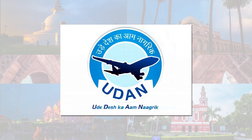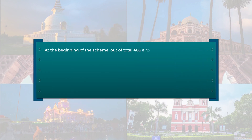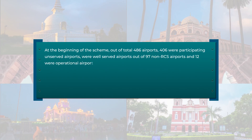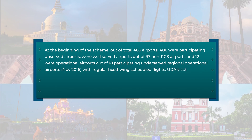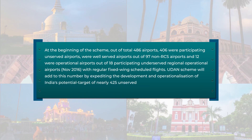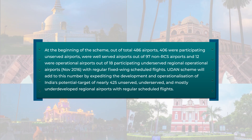The objective of UDAN is letting the common citizen of the country fly, aimed at making air travel affordable and widespread to boost inclusive national economic development, job growth, and air transport infrastructure development of all regions and states of India. At the beginning of the scheme, out of total 486 airports, 406 were unserved, 63 were well-served, and 17 were non-RCS airports.